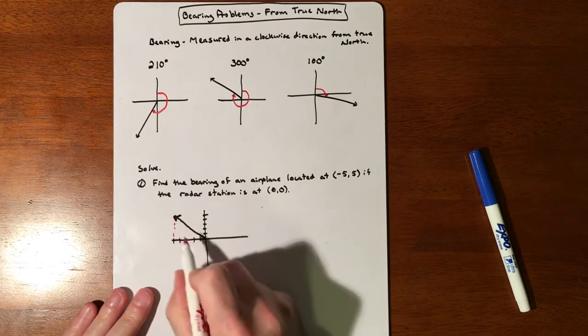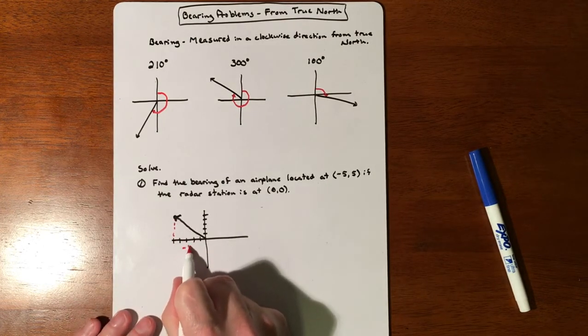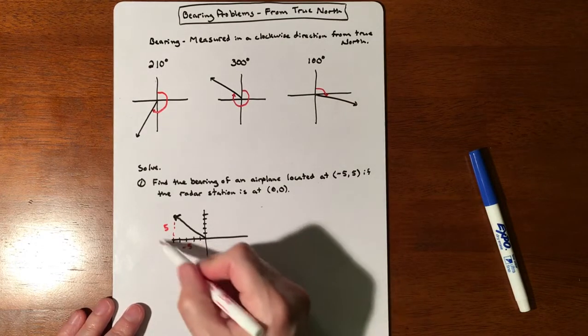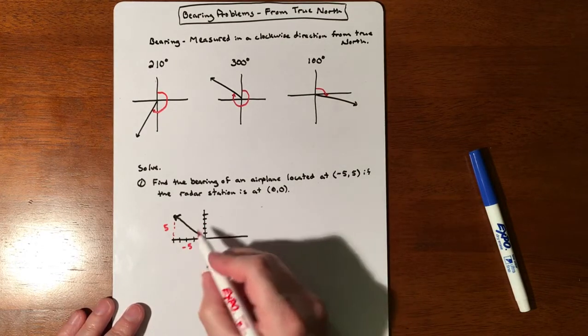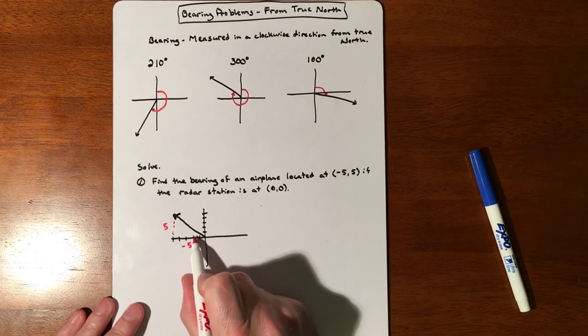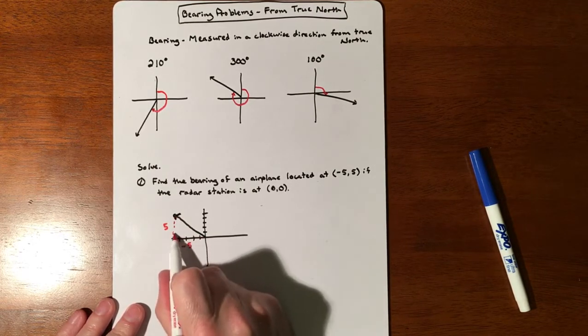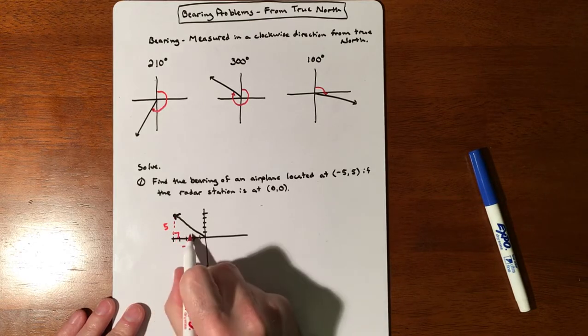If we make this into a triangle, you are negative 5 in that direction, 5 in that direction. Now you are welcome to do SOHCAHTOA, do tangent to figure this out, but it's also an isosceles right triangle which makes it a 45 degree reference angle.